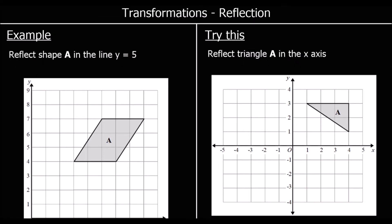Here's a different question — this time we're being asked to reflect the shape. The first question says: reflect shape A in the line y equals five. So y equals five goes all the way across this line, and everywhere on this line has a y value of five. That actually cuts through the shape, so it's an interesting question. Taking each corner individually, this point was one away from the mirror line — the shortest distance is a straight line — so one away on the other side.